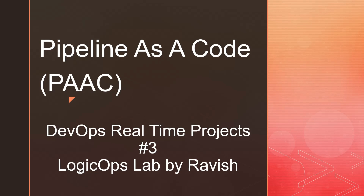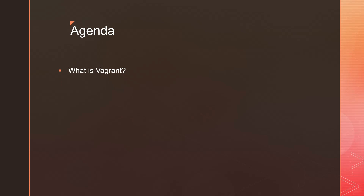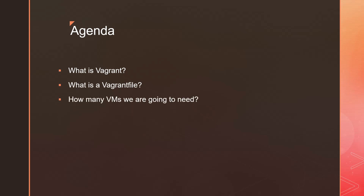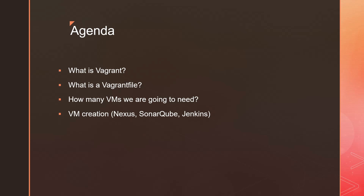Hey folks, my name is Ravish and welcome back to another video in the series of DevOps real-time project. We are starting a new project - the name of this project is Pipeline as a Code, or PAAC. This is the first video in the series. Today's agenda covers: what exactly is Vagrant, what is a Vagrantfile, how many VMs we need, creation of VMs - Nexus as Artifactory, SonarQube for code coverage and vulnerabilities, and Jenkins for CI - and then VM validation after creation.